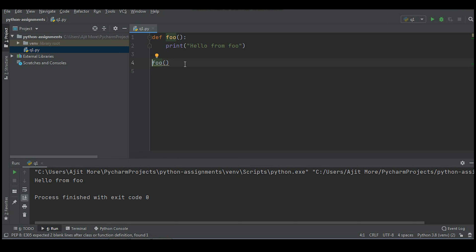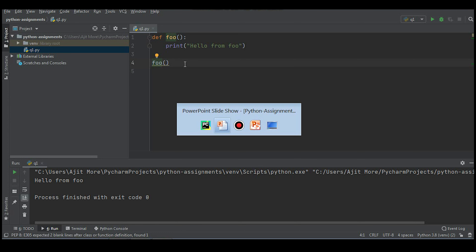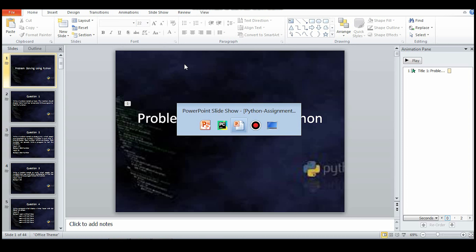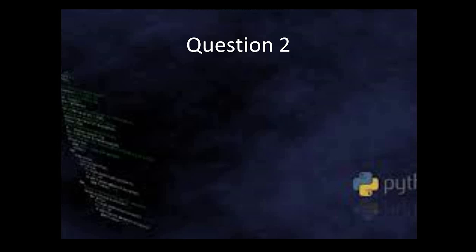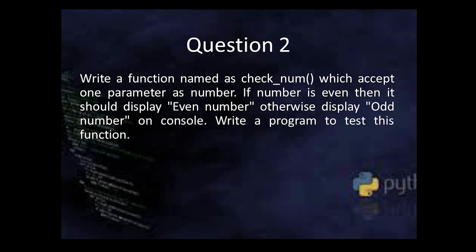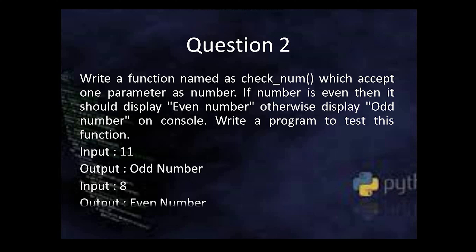Running the script — it displays 'hello from foo'. I hope you understood that. Now the second question: write a function named 'check_num' which accepts one parameter as a number. If the number is even, display 'even number'; otherwise display 'odd number'. For example, if input is 11 it should display 'odd number', and if input is 8 it should display 'even number'.